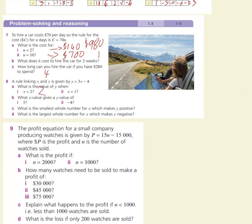When x equals 1: 3 times 1 is 3, take 4 is minus 1. What x value gives a y value of 5? We can use algebra: 5 equals 3x take 4. Add 4 to both sides to get 9 equals 3x, then divide both sides by 3 to get x equals 3.